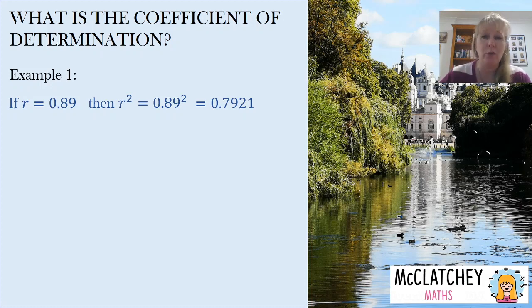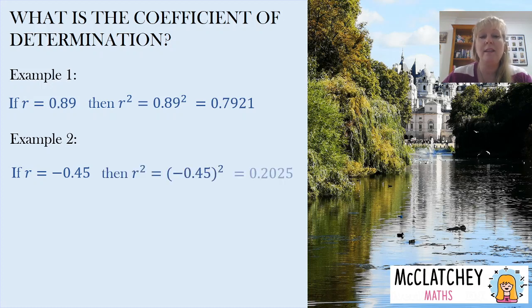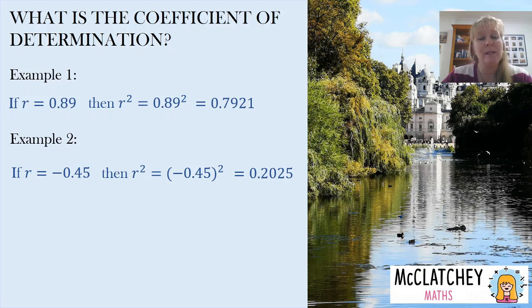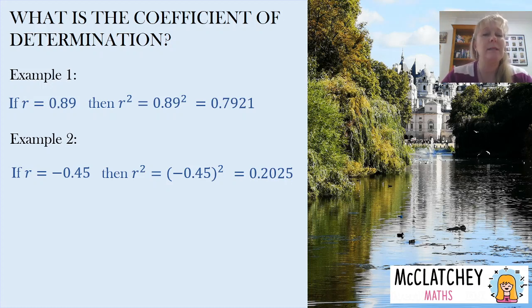I recommend you do this along with me on your calculator. Let's try it with a negative number. If R is equal to negative 0.45, then R squared is going to equal 0.2025, because a negative times a negative is a positive. Now I do need to give you a small caveat with your calculator. If you simply type in negative 0.45 and then press the squared button, your calculator will get confused and return a negative value of negative 0.2025. Your calculator thinks you want negative 0.45 times negative 0.45 times negative 1. I recommend that when squaring on your calculator, you put the number in brackets first and you'll get the correct answer.